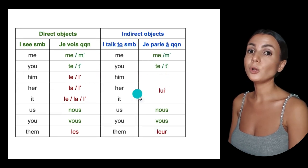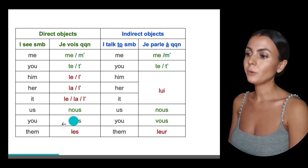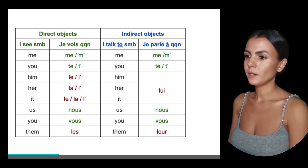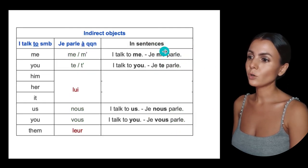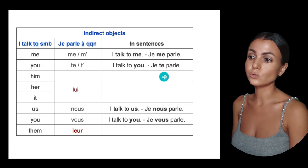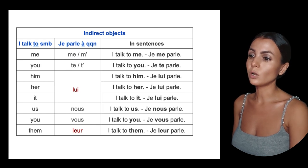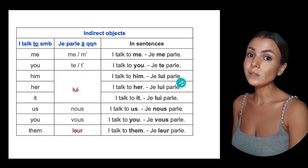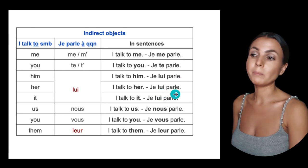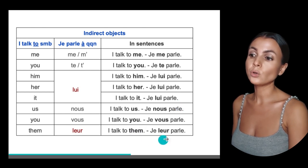For indirect pronouns, we have lui for him/her/it, and leur for them. They also go before the verb. So: I talk to me — je me parle; I talk to you — je te parle; I talk to us — je nous parle; I talk to you — je vous parle. And if it's indirect, not direct, you use lui: I talk to him — je lui parle; I talk to her — je lui parle; I talk to it — je lui parle. And I talk to them — je leur parle.